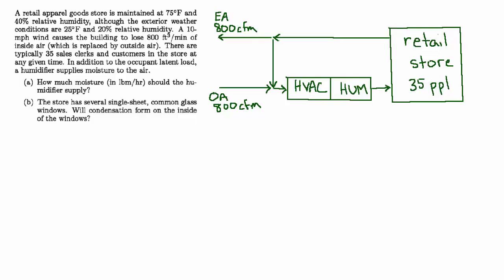101 Solved Mechanical Engineering Problems, HVAC 8: A retail apparel goods store is maintained at 75°F and 40% relative humidity, although the exterior weather conditions are 25°F and 20% relative humidity—so it's very cold and dry. A 10 mile per hour wind causes the building to lose 800 CFM of inside air, which is replaced by outside air.